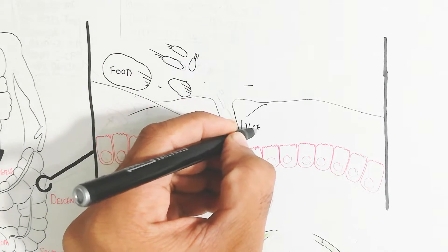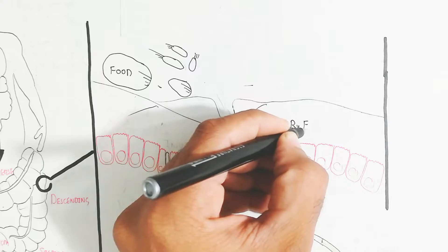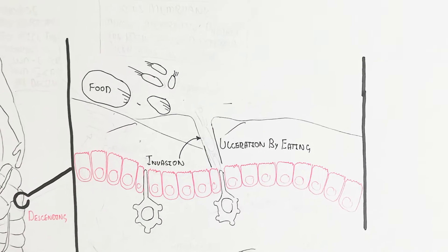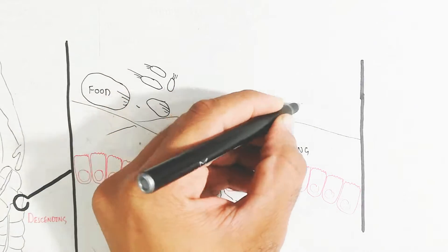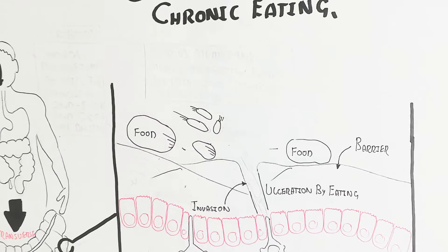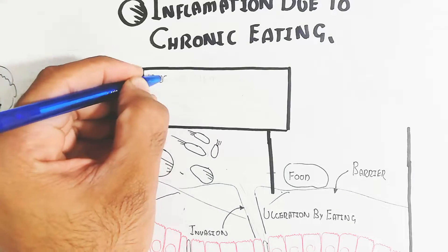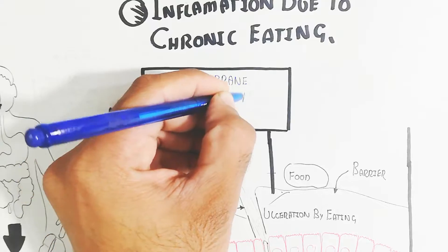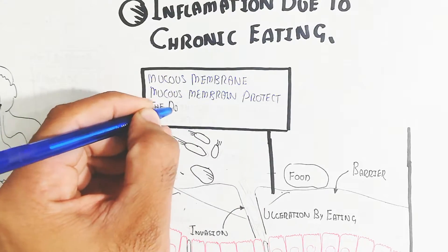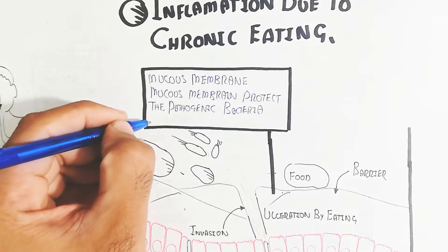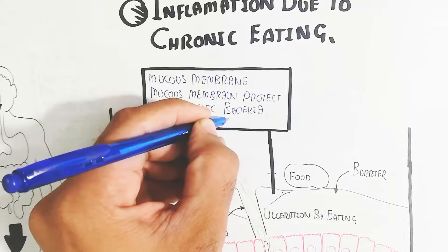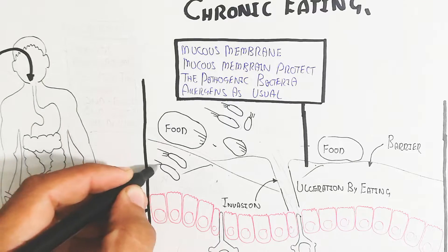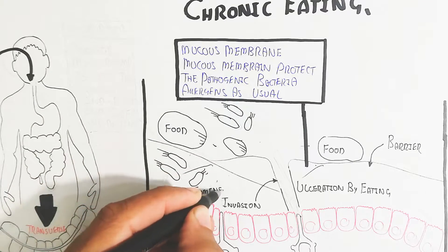The mucous membrane helps to expel the food down. This food basically moves downward from the ascending to transverse to descending colon. In this way, the peristaltic movement and barrier immunity can be ruptured due to overeating. The mucous membrane protects against pathogenic bacteria, allergens, and other foods which will not contact due to the mucous membrane.